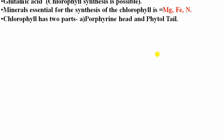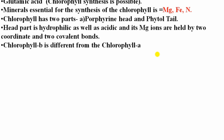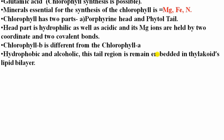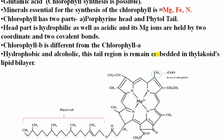Minerals essential for chlorophyll synthesis are magnesium, iron, and nitrogen. Chlorophyll has two parts: a porphyrin head (hydrophilic and acidic) and a phytol tail (hydrophobic and alcoholic). Magnesium ions are held by two coordinate covalent bonds. The tail region remains embedded in the thylakoid lipid bilayer. In chlorophyll b, the CH₃ group at position 3 of the second pyrrole ring is replaced by a CHO group.